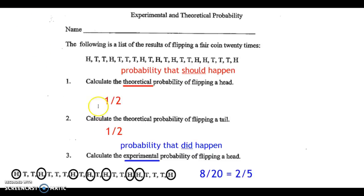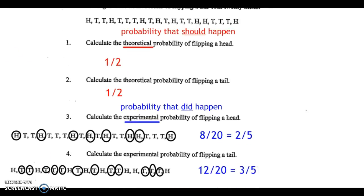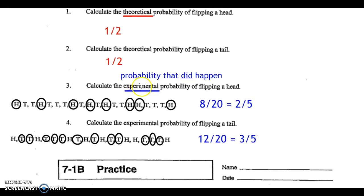Check your answers here. Theoretical probability never changes — flipping heads on a fair coin should always be 1 out of 2, because there is 1 heads and 2 possible outcomes. Same thing with flipping tails. Experimental probability, however, requires us to look at what did happen. I circled 8 times that landed on heads, so 8 out of 20 equals 2 over 5. With flipping tails, there were 12 tails, so 12 over 20 equals 3 over 5.